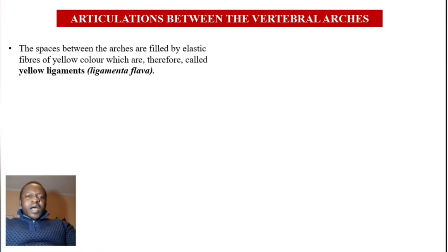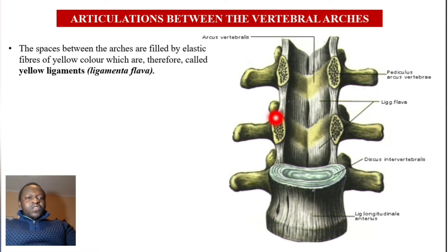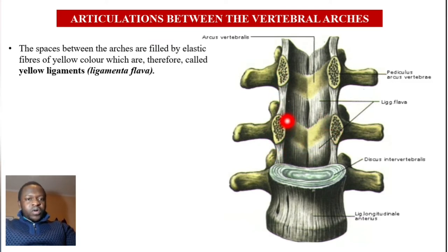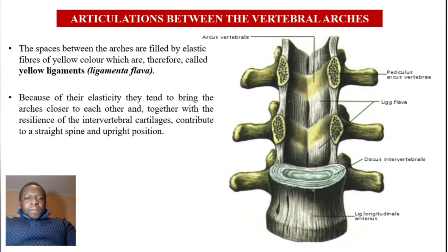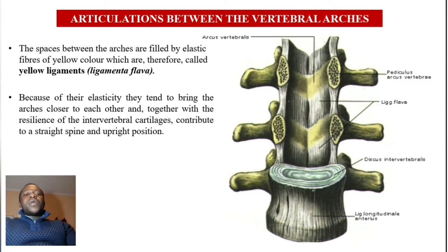Next, articulations between the vertebral arches. The spaces between the arches are filled by elastic fibers of yellow color, therefore called yellow ligaments or ligamentum flavum. In this view the vertebral bodies have been removed so you can see the vertebral arches and in between the yellow ligaments, ligamentum flavum. Because of their elasticity they tend to bring the arches closer to each other, and together with the resilience of the intervertebral cartilages they contribute to a straight spine and upright position.